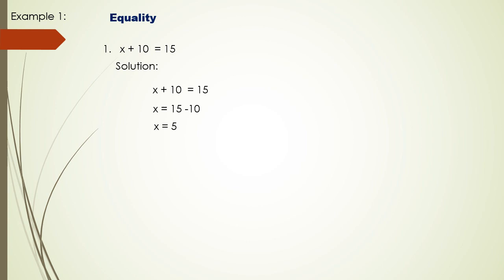For the inequality, we have 10 > 5. It is true that 10 is greater than 5. If we multiply both sides by negative 1, it becomes −10 and −5. The symbol of the inequality will change — since it was greater than, it will become less than: −10 < −5.